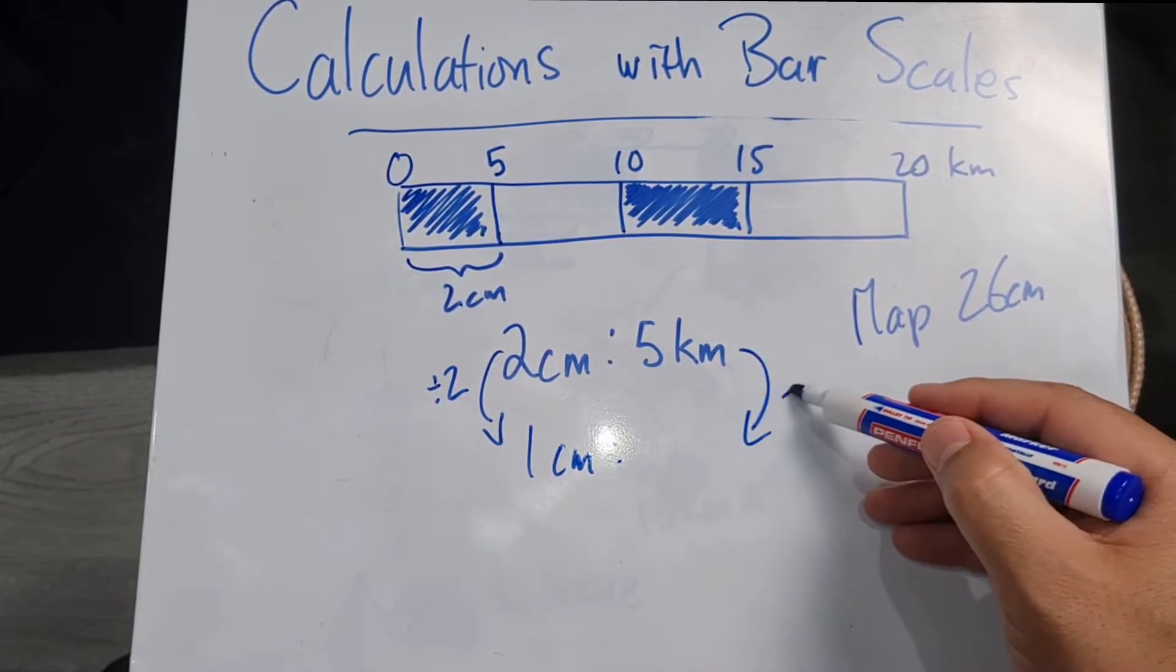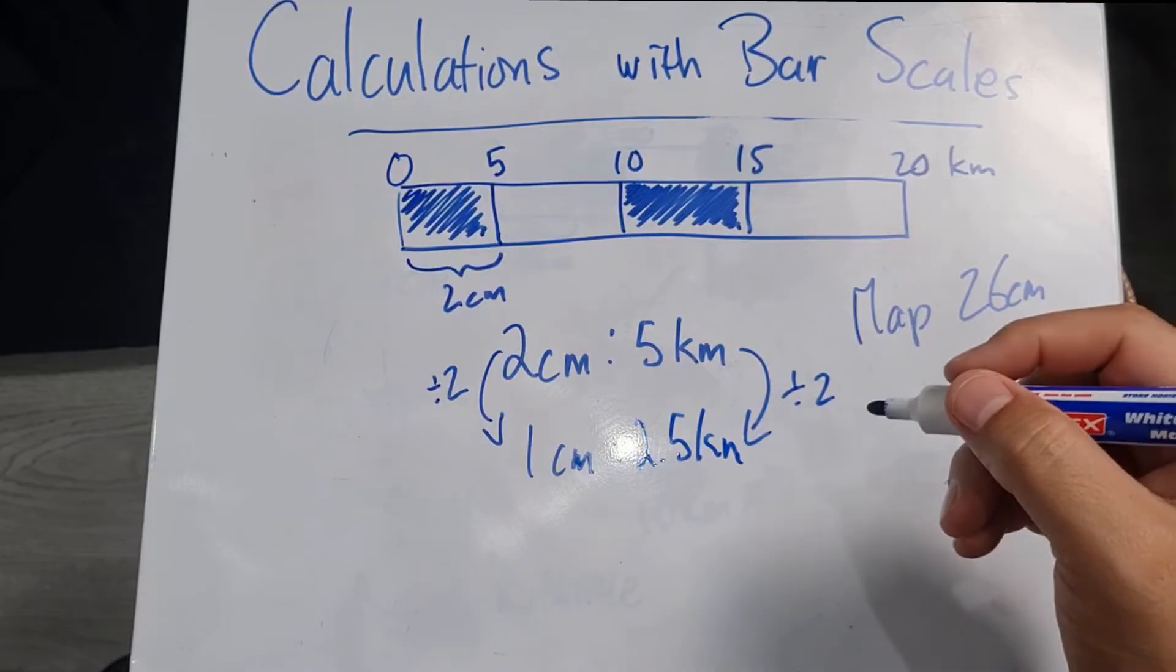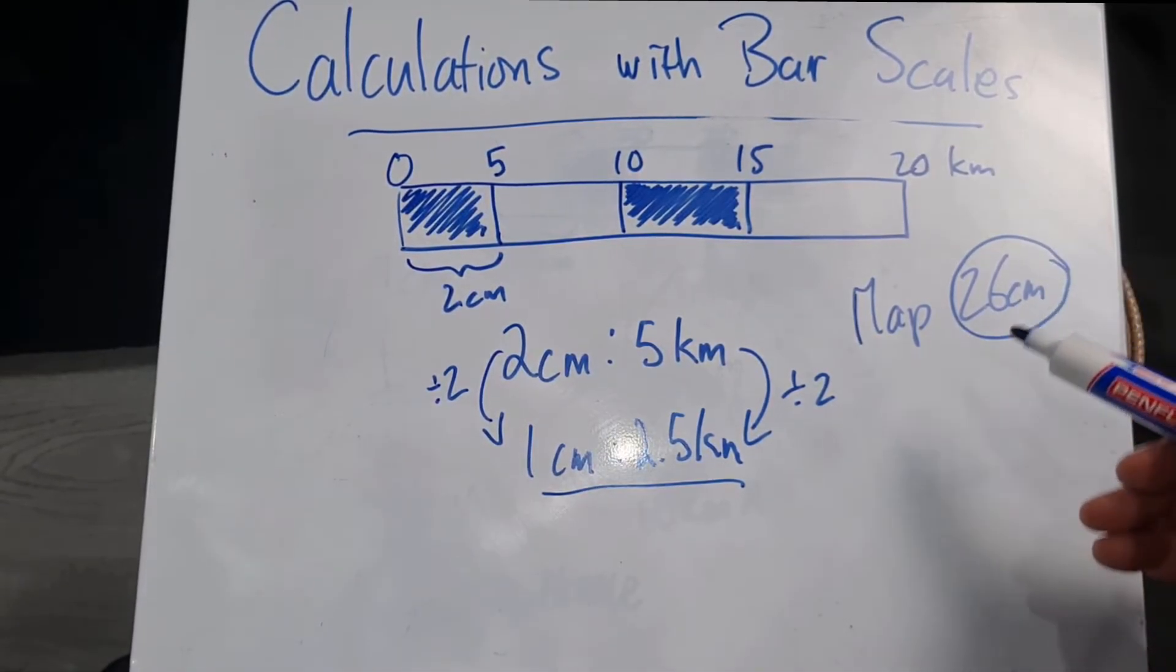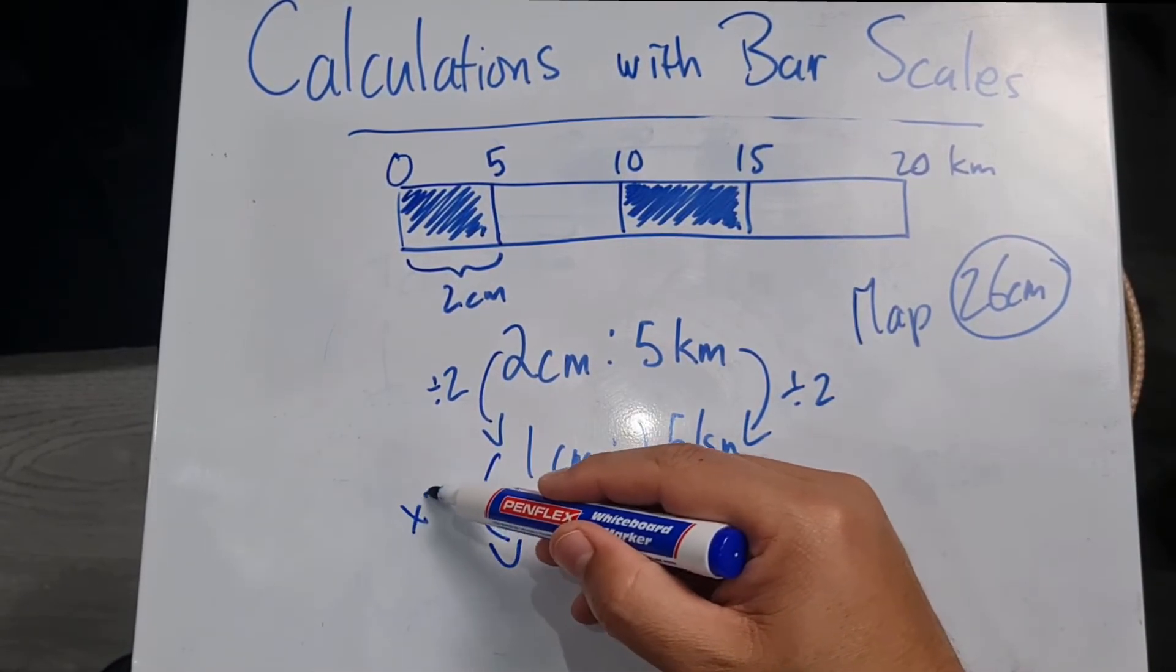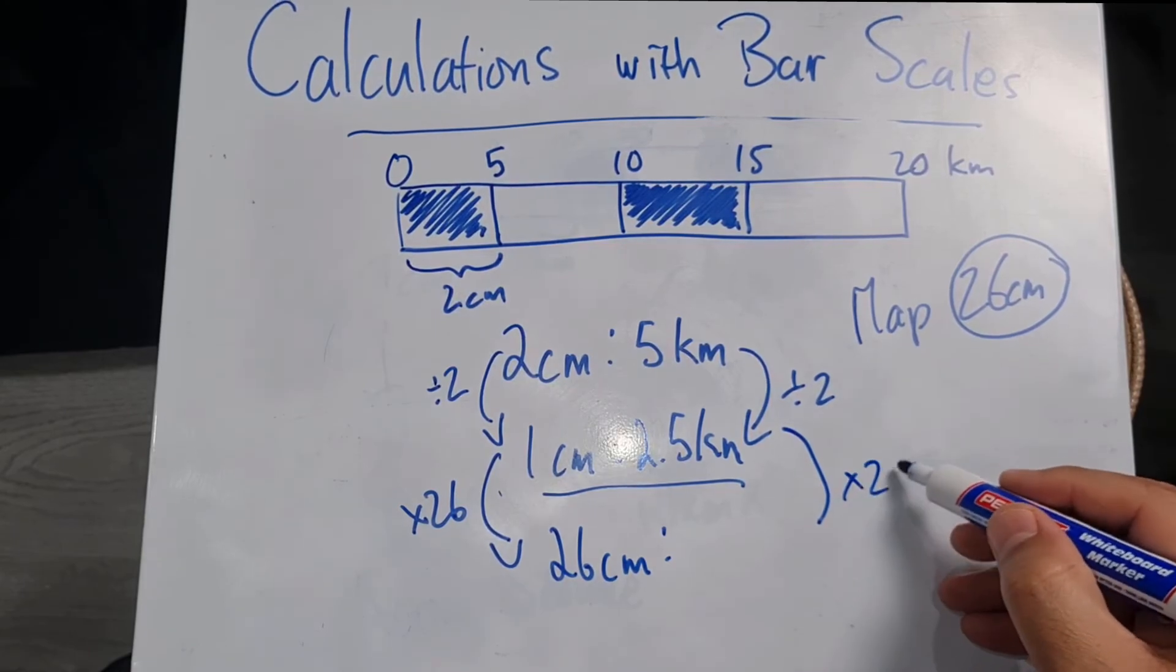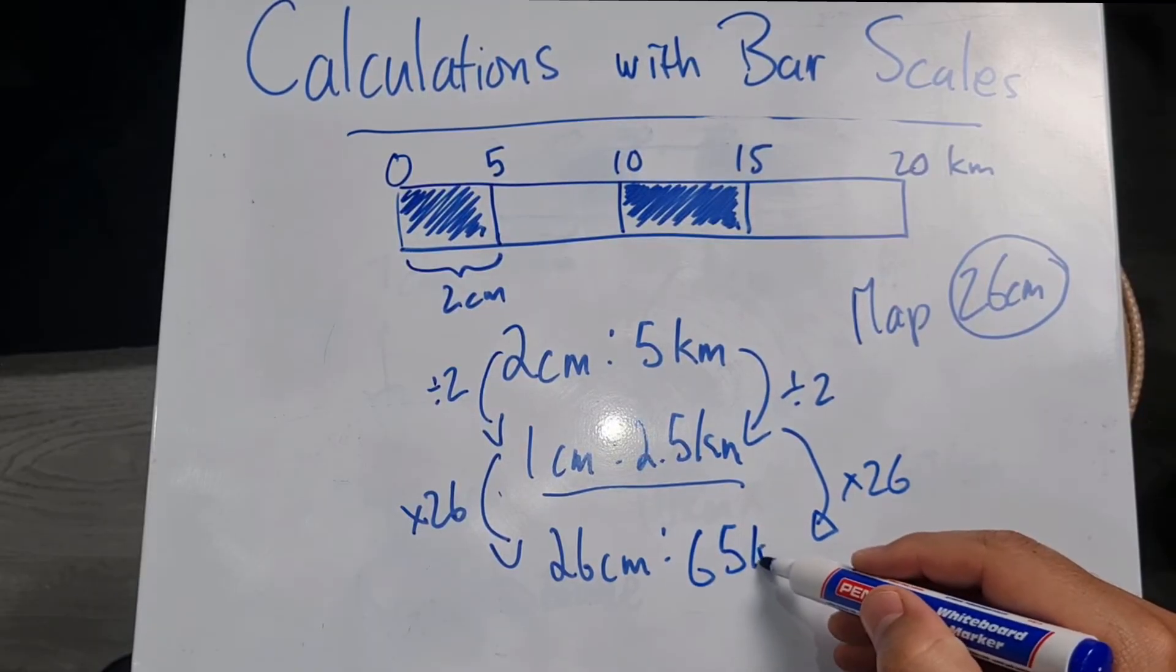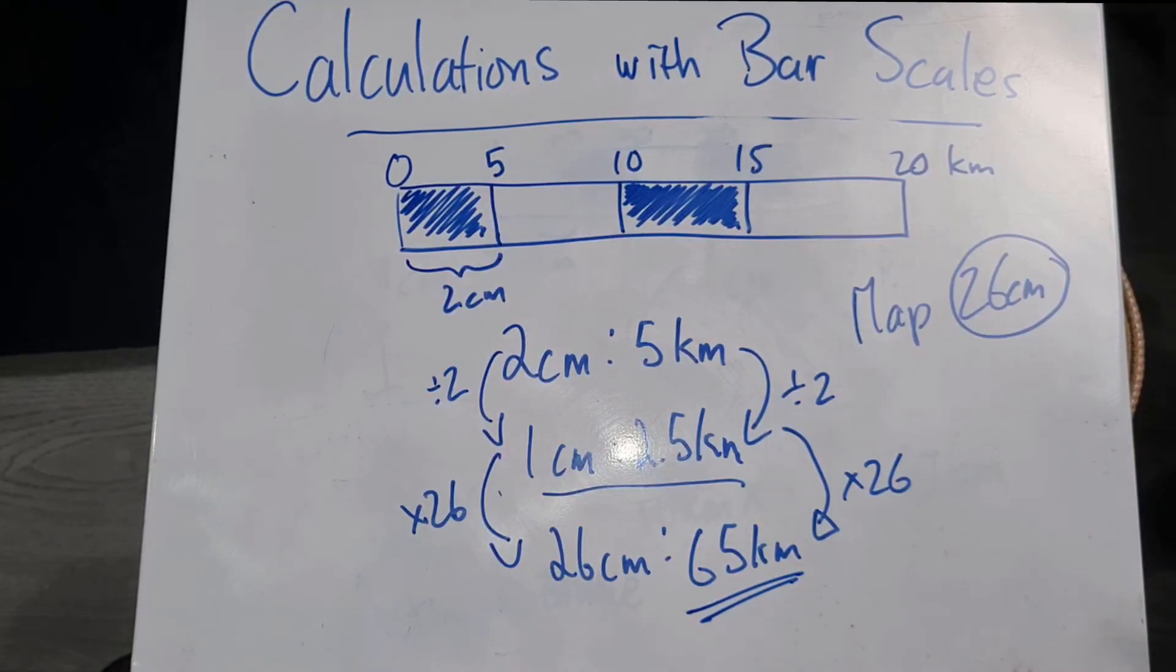Now I know what my ratio is for one centimeter. How many centimeters do they want me to check? They want me to get the actual distance based on 26 centimeters. So what am I going to have to do? I'm going to have to multiply by 26 to get 26 centimeters, and I'm going to have to multiply by 26 on this side as well, and that should give me 65 kilometers. That then is my actual distance.